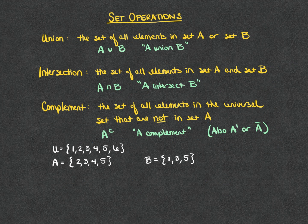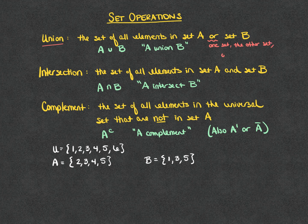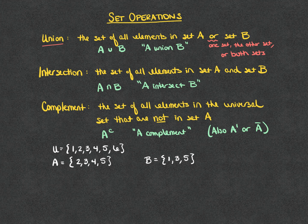Now let's move on to set operations. A union of sets is the set of all elements in set A or in set B. The 'or' here means one set, the other set, or both sets — which may be different from everyday English where 'or' implies choosing one. In mathematics, 'or' means you can have one, the other, or both. The notation is A union B. I like to think of the union symbol as a cup or bag where you throw everything from set A and set B together.